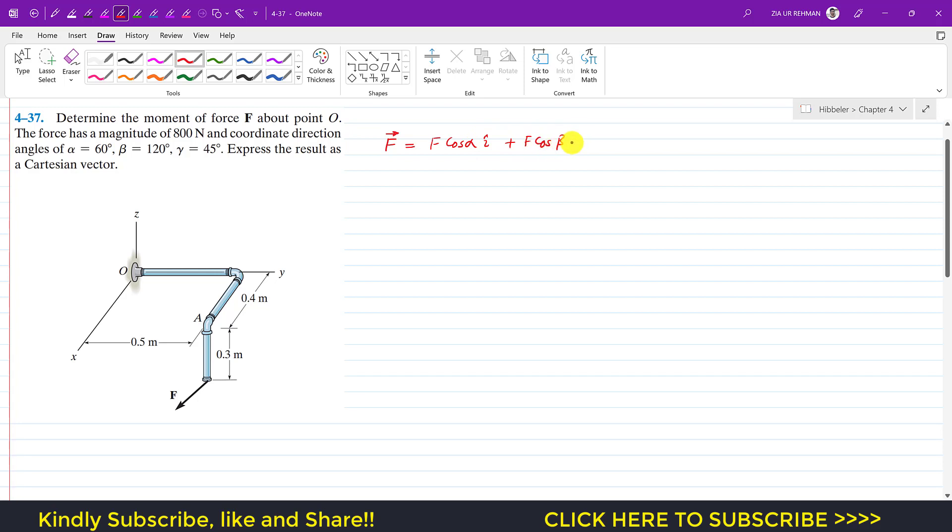Now F is 800, the magnitude is 800. So we will write this as 800 cos(alpha), alpha is 60 degrees, plus F is again 800 cos(beta), beta is 120, and 800 cos(gamma), gamma is 45 degrees, and this is k.